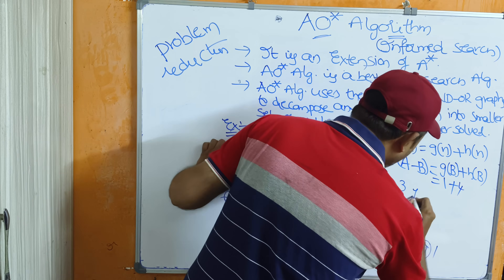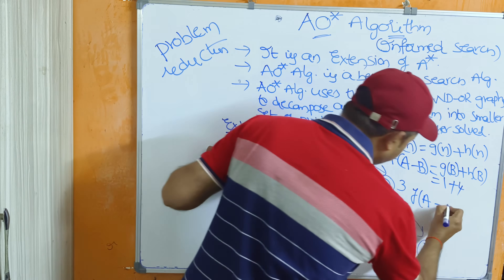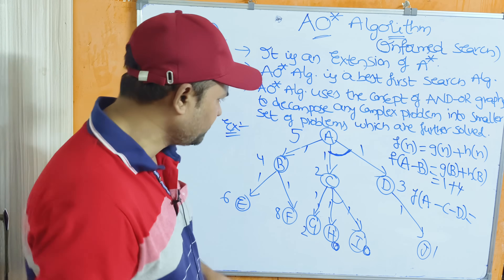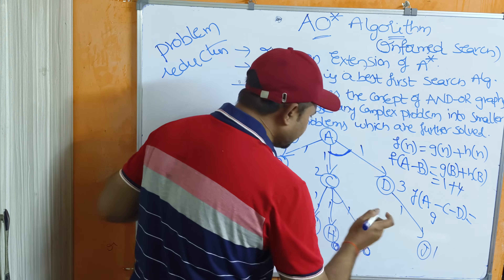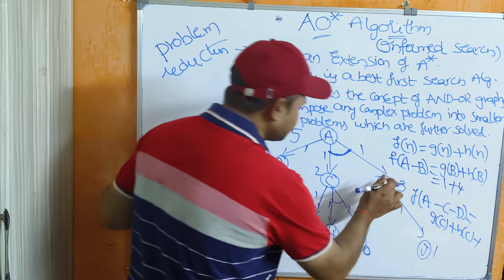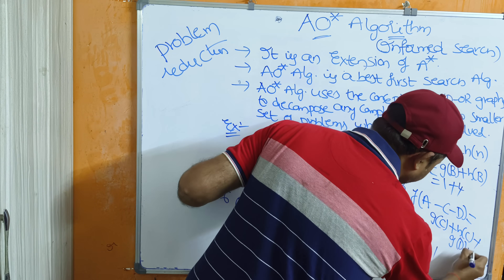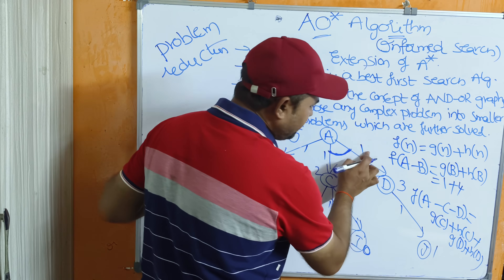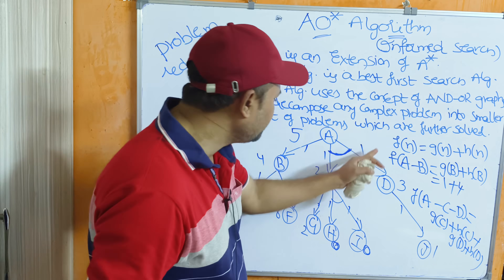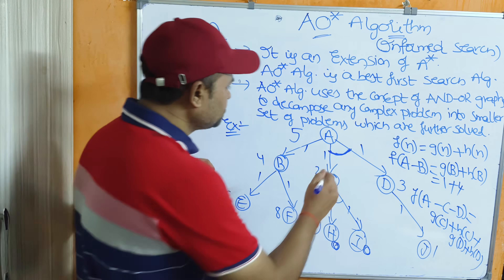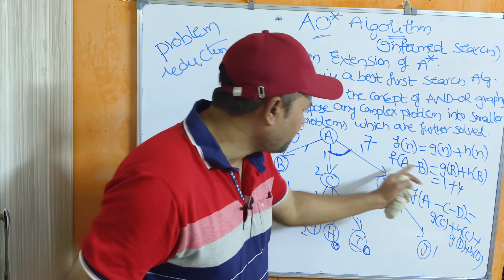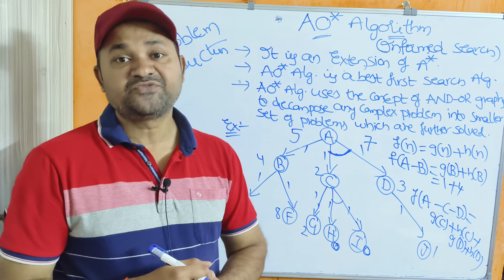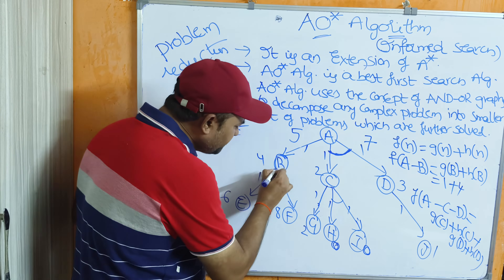Next, we determine F(A→C,D). Since C and D form an AND graph, the formula is: [G(C) + H(C)] + [G(D) + H(D)]. G(C) = 1, H(C) = 2, so that gives 3. G(D) = 1, H(D) = 3, so that gives 4. Total: 3 + 4 = 7. So F(A→B) = 5 and F(A→C,D) = 7. The minimum is 5, so we select B and explore that path next.